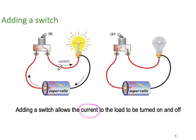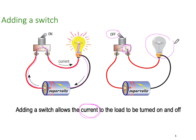With the switch closed or on, current flows through the switch, up into the lamp and back to the battery — the lamp is on. When we switch it off, we've created an open circuit, so there is no current flow and the lamp is not operating. Adding a switch allows the current to the load to be turned on and off — it's the current we're turning on and off, nothing else.